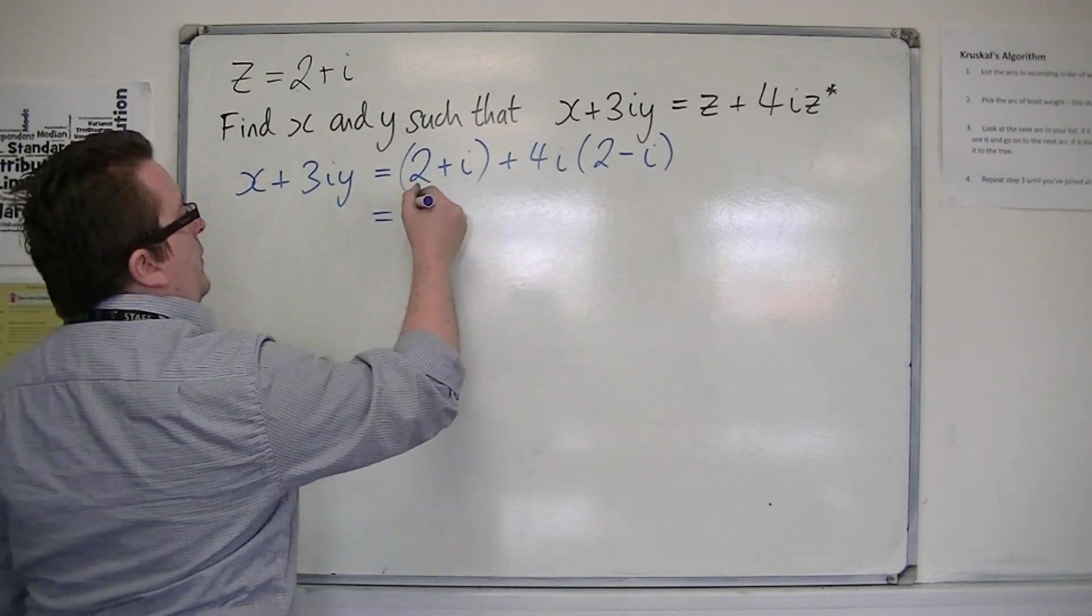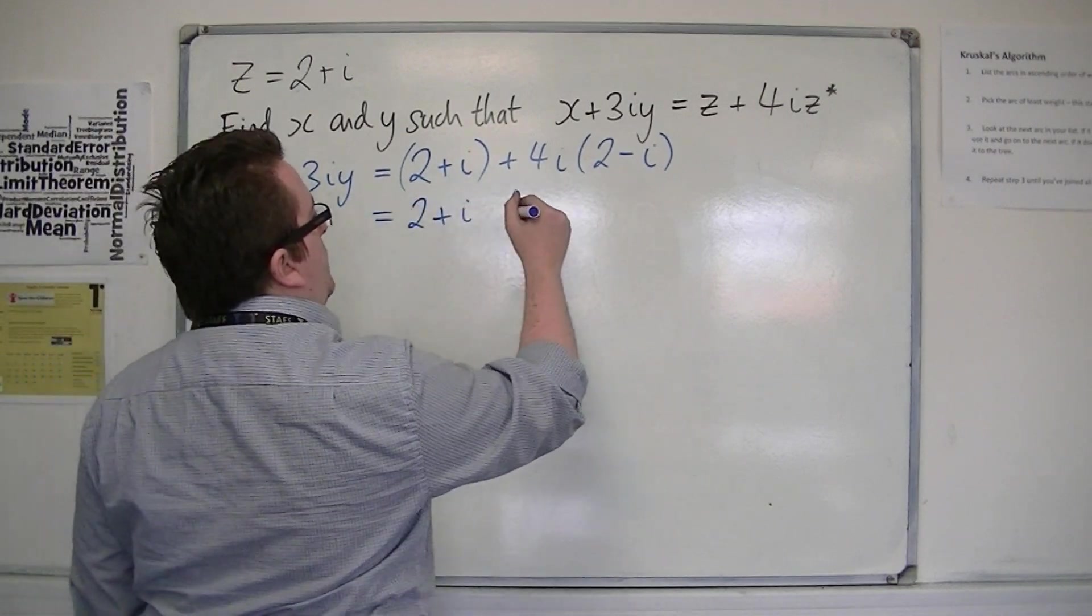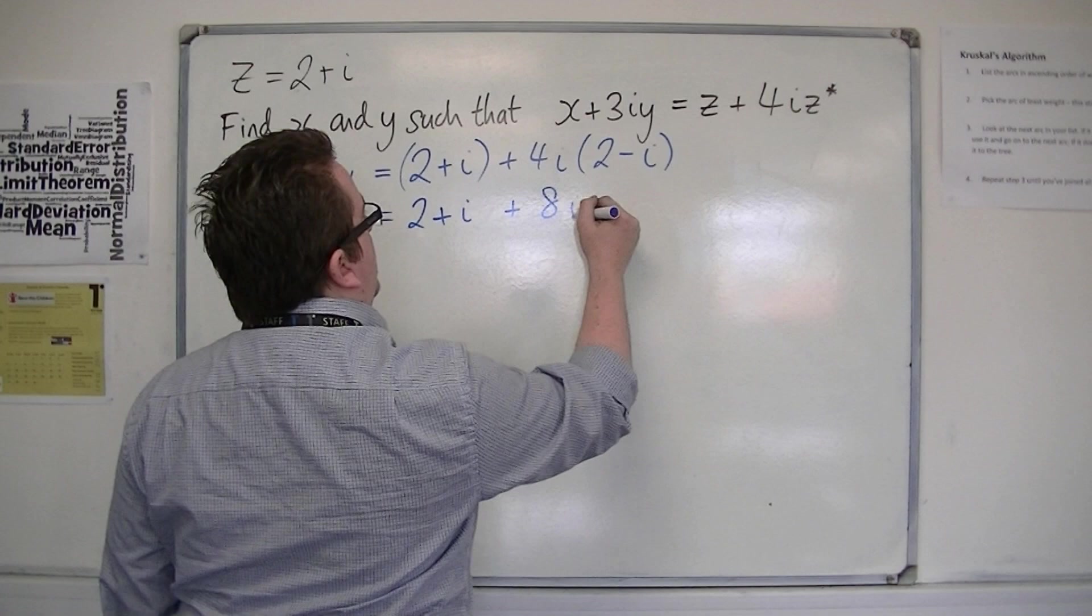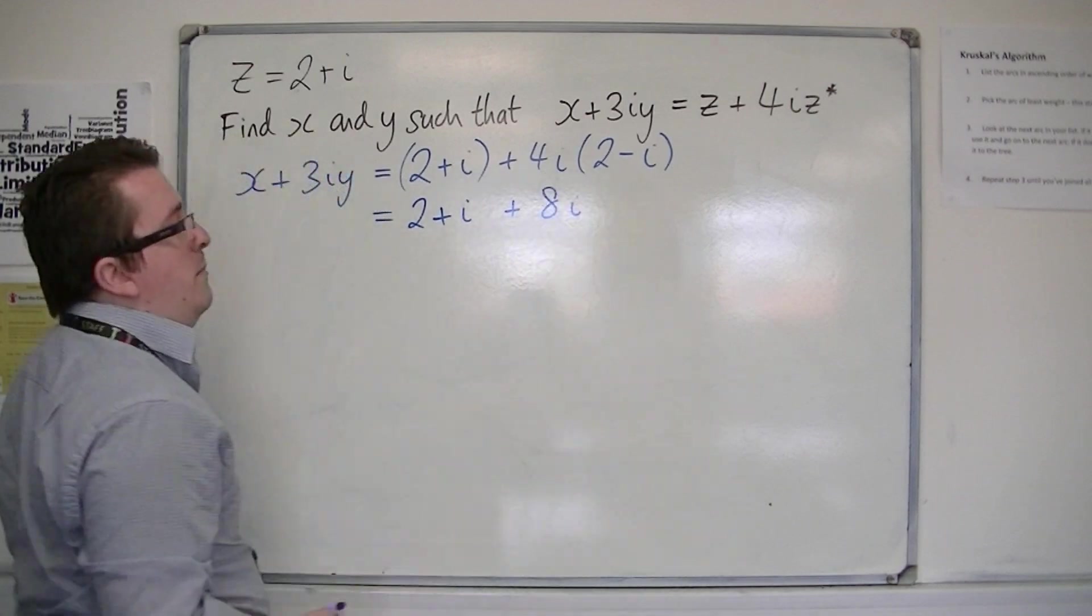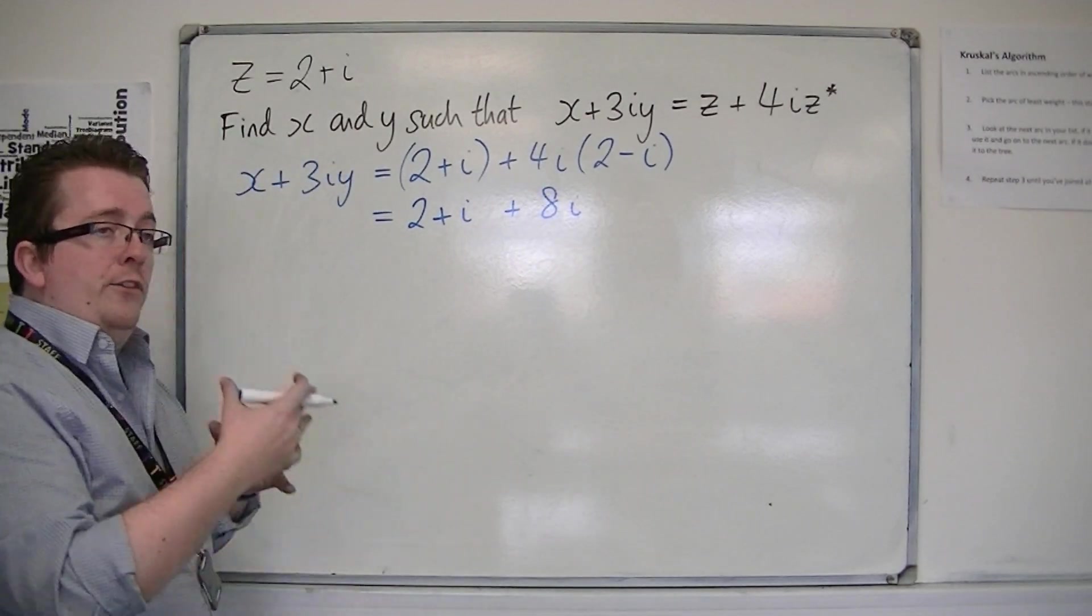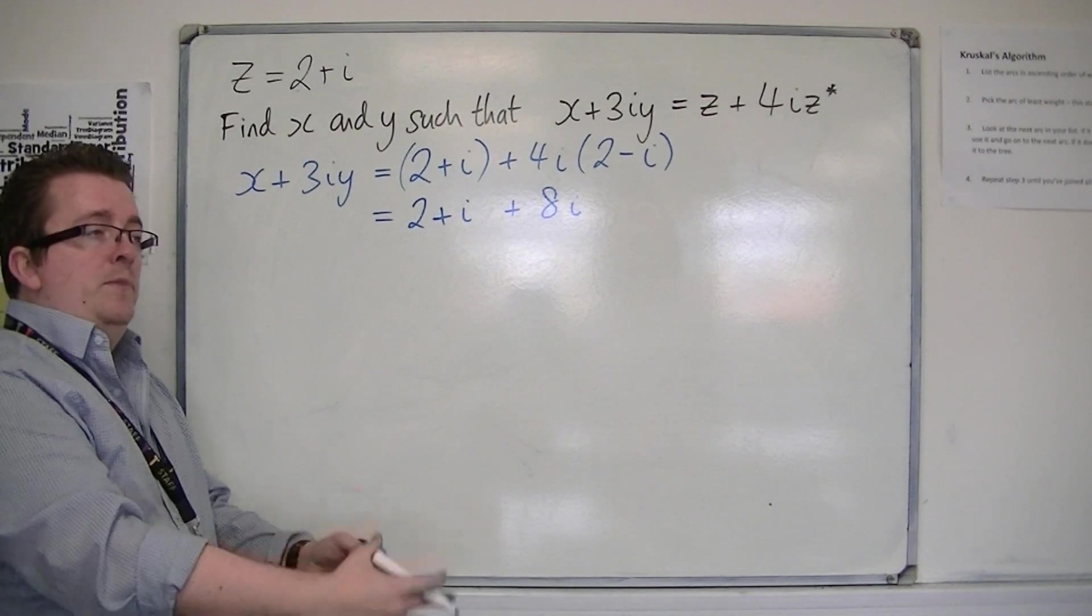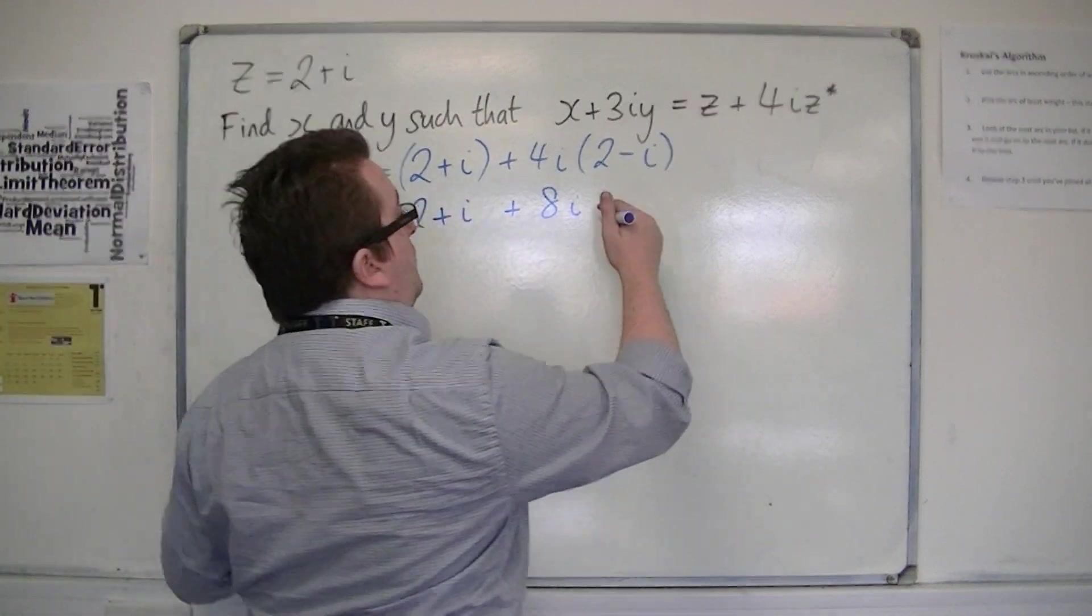So expand the right hand side, so we've got 2 plus i plus 8i, and then we've got 4i times minus i, so that's minus 4i squared, which is minus 4 times minus 1, so that's plus 4.